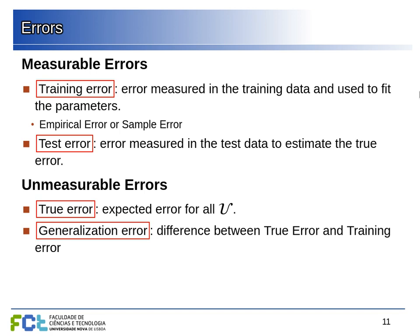To summarize: the training error is measured on the labeled points we use to train the model — those are the ones whose error we minimize by adjusting the parameters. The test error is measured outside this training set, on points we also have labels for, but did not use for training. The test error's purpose is to give us an unbiased estimate of the true error, which is the expected error for the whole universe of points — something we cannot measure directly.